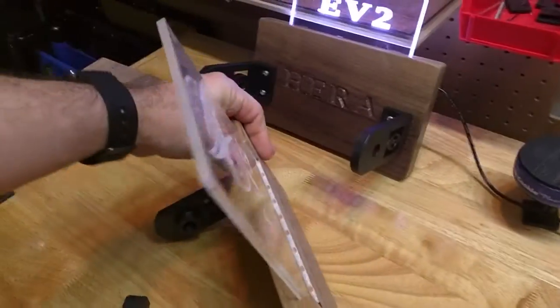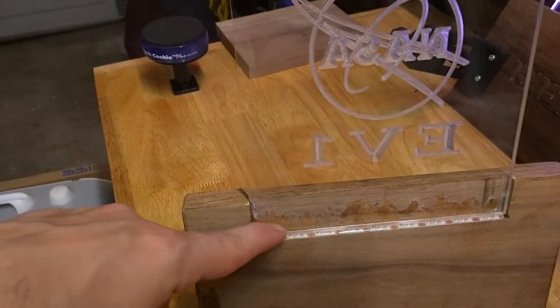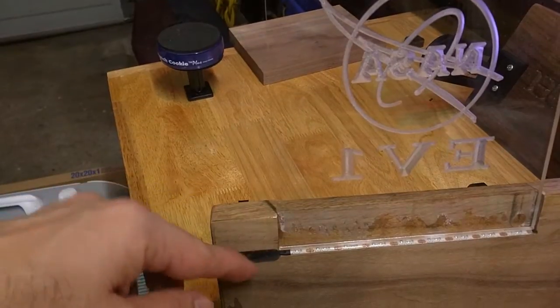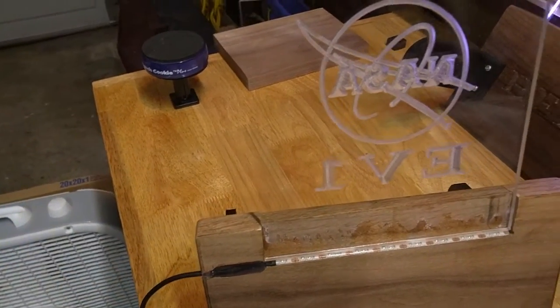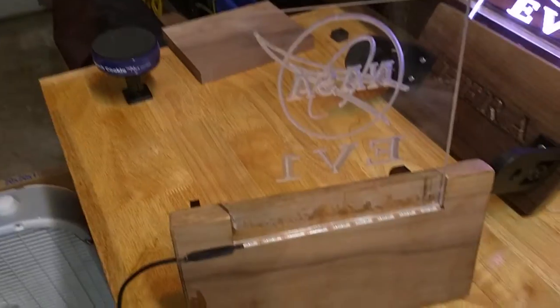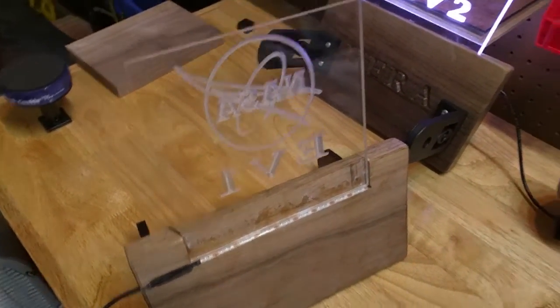And then I used Easel, the Inventables Easel software, to carve out this little pattern to put the acrylic in and also run the lights and the wire. Hopefully that helps someone or inspires someone to make a light-up sign. It's really easy—you buy that light strip.